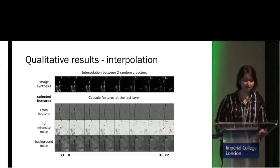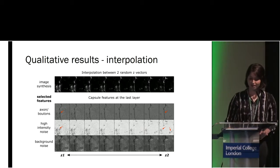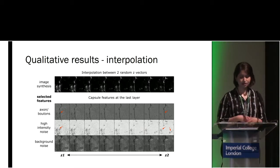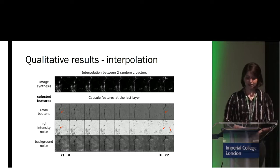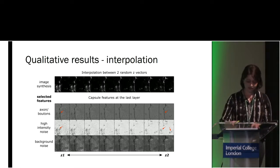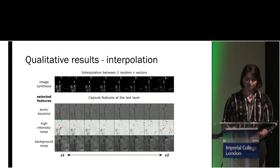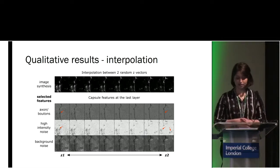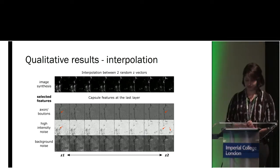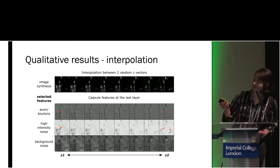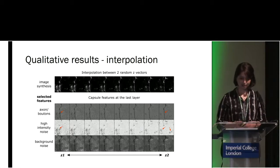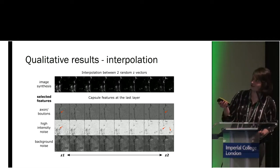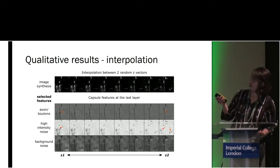Since our network has a latent space, we can also examine it using interpolation. Interpolation allows us to examine how well our network has captured the axon and noise classes. To do interpolation, you take two random Z vectors and linearly interpolate between them, inputting the same image with different Z vectors. Here we can see that at the very left the axon has two boutons, and as we interpolate this bouton disappears — one of the key features of axon intensity that we wanted to encode. In addition, the structured noise is also encoded very well and changes across the latent space.